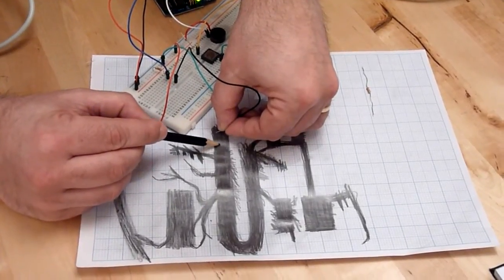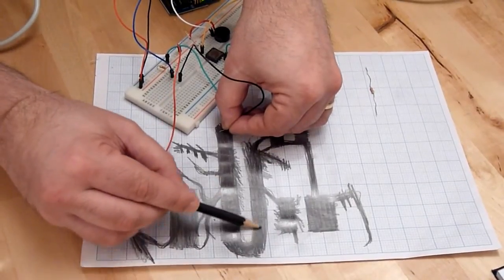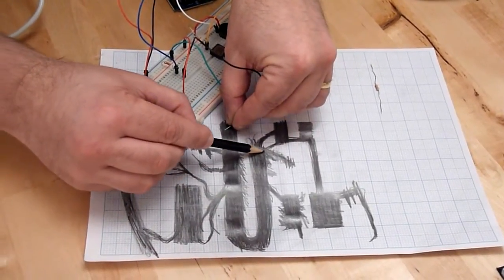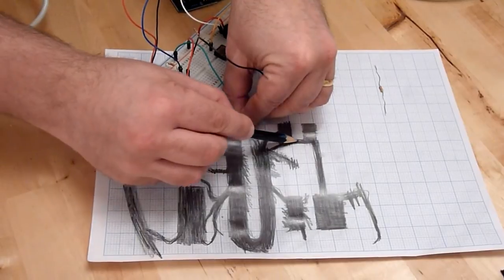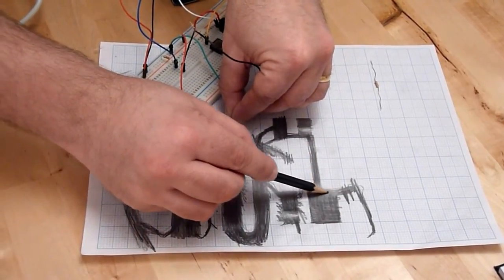As the pencil gets closer to the contact the pitch goes up and as we get further away. That's further away in terms of the amount of pencil graphite between us and the other contact, the lower the note gets.